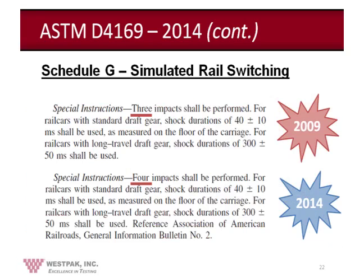The previous 2009 revision stated that three impacts shall be performed. In the 2014 revision, that changed to four impacts. The standard has two distinct types of draft gear on the rail car. The standard draft gear was designed around the 1910s and represents a solid link between the rail cars.